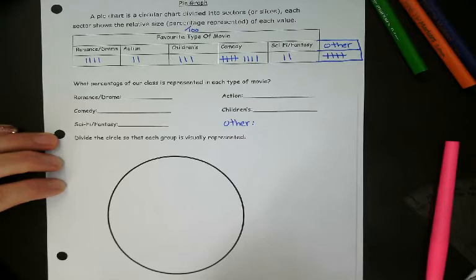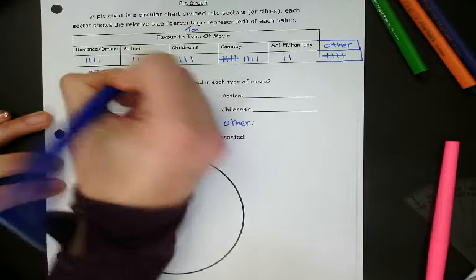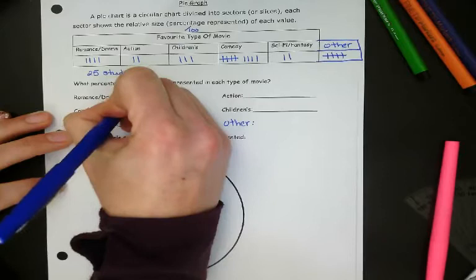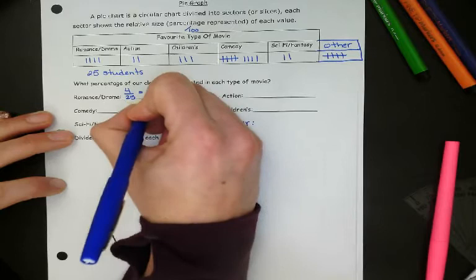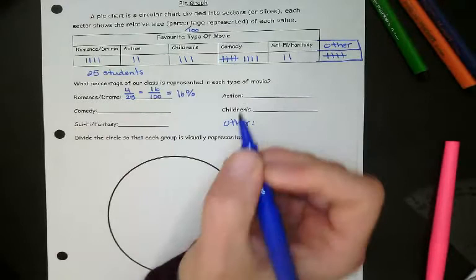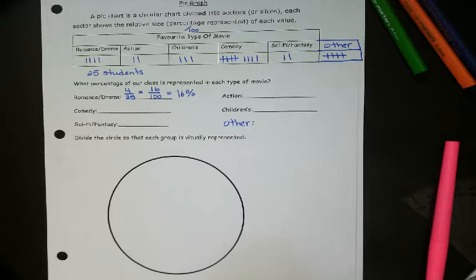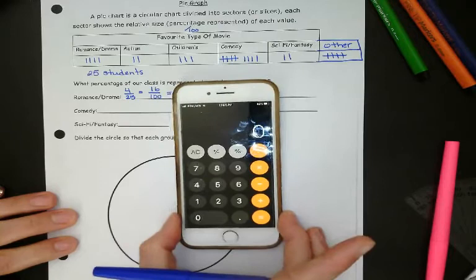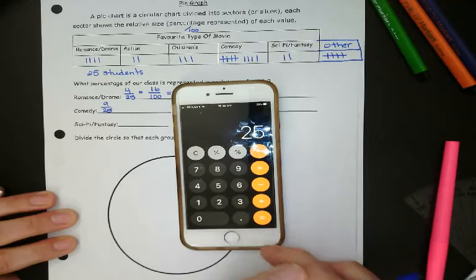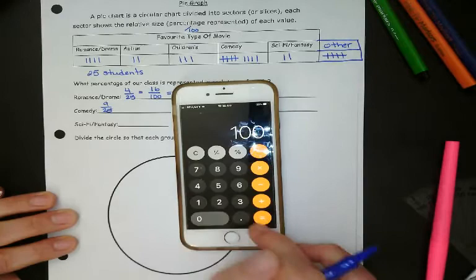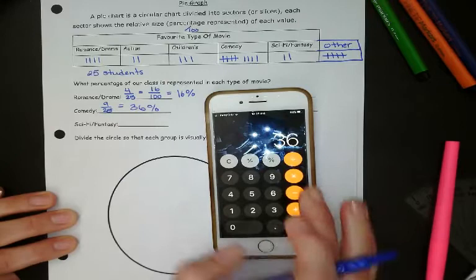So we need to make all of these into fractions first. So in total, there are 25 students. So we're going to make a percent. So we know that there are four out of 25. And remember, you have to either make an equivalent fraction, so I know I can multiply both of these by four to get my percentage. Or the other way, if you have a calculator, it's pretty simple to do percentages on a calculator. So what you're going to look at doing, so let's say, okay, so comedy is next. So we have nine out of 25. So on your calculator, you're going to press nine divided by 25. It's going to give you a decimal. If you want to change that to a percentage, times it by 100, and you'll get your percentage. That's 36%.